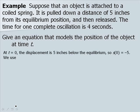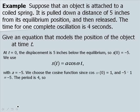At t equals 0, the displacement is 5 inches below the equilibrium. So S of 0 is equal to negative 5. We use S of t equals a cosine of omega t instead of the sine equation, with a being equal to negative 5. So our amplitude is our initial position, which is negative 5.